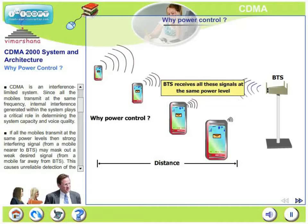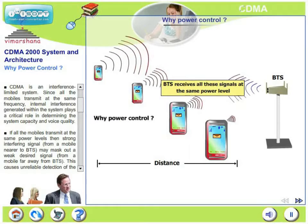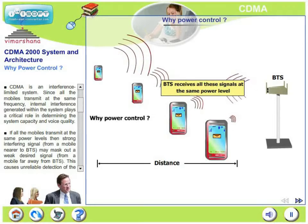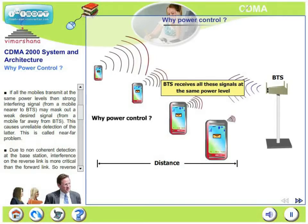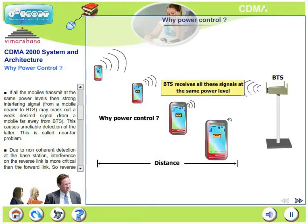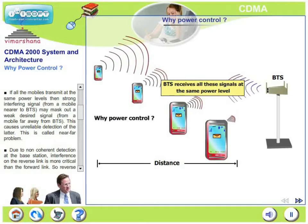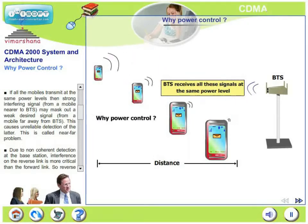CDMA, as we all know, is an interference-limited system. All the mobiles transmit on the same frequency. Therefore, internal interference is generated among active mobiles, and this interference plays a very critical role in determining system capacity and voice quality. More mobiles active means more interference, and voice quality deteriorates. Therefore, any CDMA system is limited by interference, which is directly proportional to the number of active users — meaning system capacity is limited by the interference generated.